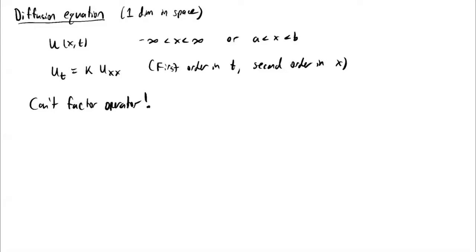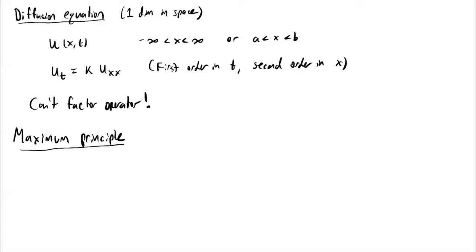Since it's going to be a little difficult to obtain a solution formula for this equation, what we're going to do first is try to analyze the solutions on a slightly more abstract level, talking about certain properties and symmetries that solutions must have. Then using some of the ideas we've learned, we'll be able to derive the formula in a few lectures. Today we're going to focus on one very important theorem that describes solutions to the diffusion equation — the maximum principle.